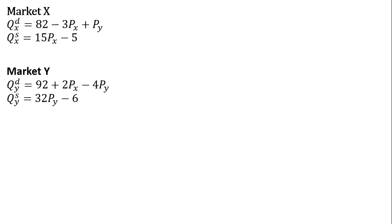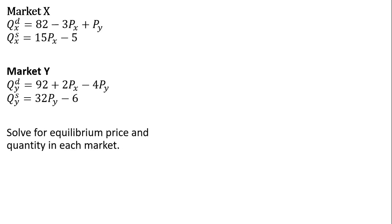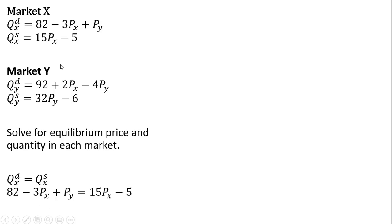Here's the quantity supplied for good Y. We want to find the equilibrium price and quantity in each market. Setting the quantity demanded for good X equal to quantity supplied using the equations from above, I'm now going to solve this for the price of good Y. I added three times the price of good X to both sides, so that's where this 18 price of good X is coming from. And then I subtracted 82 from both sides, and that's where this minus 87 is coming from.